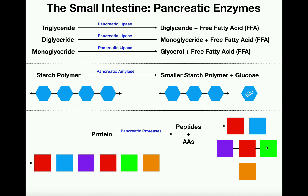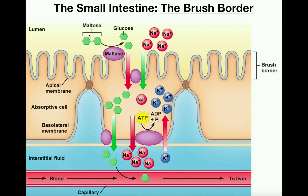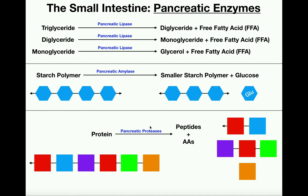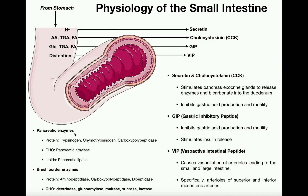So in the small intestine, one of the very important functions is chemical digestion — accomplished through brush border enzymes and also through enzymes secreted by the pancreas. One important note about the first two protein-digesting pancreatic enzymes, trypsinogen and chymotrypsinogen: when you see these written, they end in 'ogen.' These enzymes are secreted in inactive forms — when you see the suffix 'ogen' on a protein, that means it is inactive.